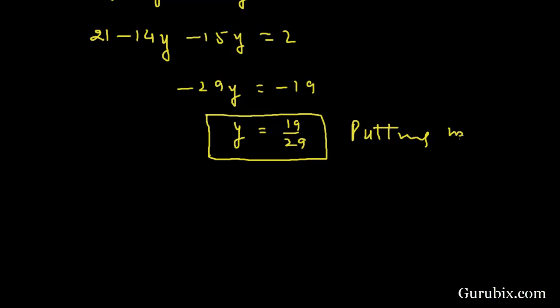Putting in equation number 2 to get the value of x, therefore x = 3 - 2y, and the value of y is 19/29. This means this value will be equal to 87 - 38 over 29, which equals 49/29.